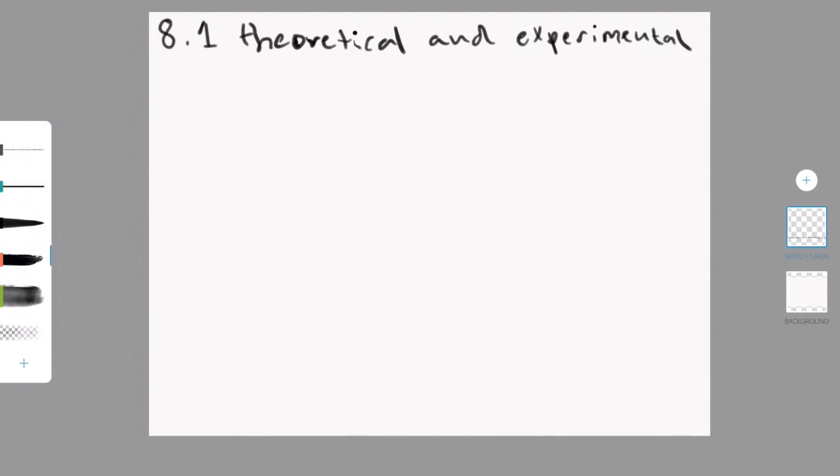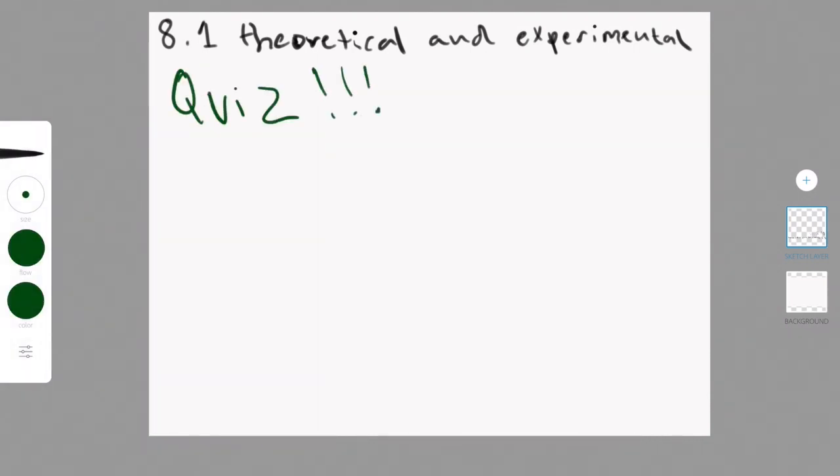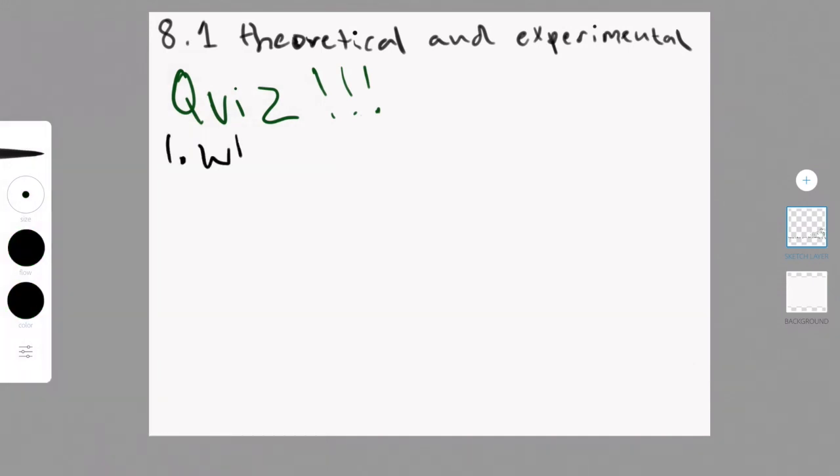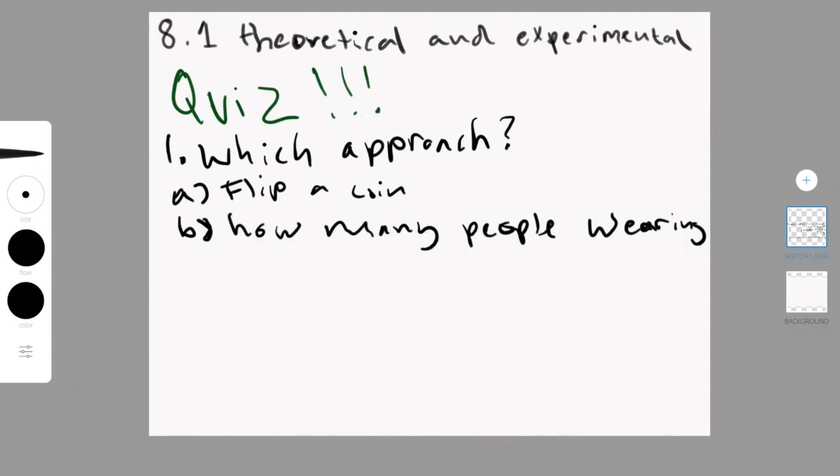That was it for chapter 8.1. Now it's time for the quiz. So the first question is about whether it would be more appropriate to use experimental or the theoretical approach in different situations. So the first situation is flipping a coin. The second situation is seeing the probability of the amount of people in your class wearing the color red.